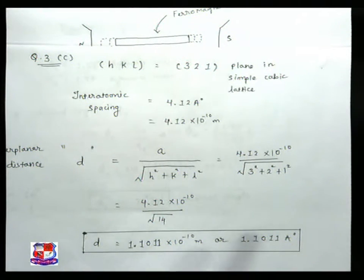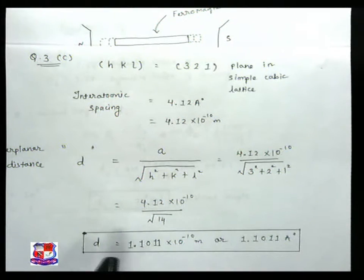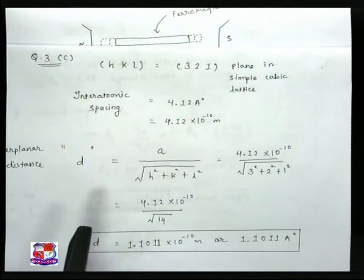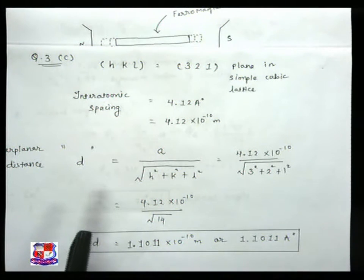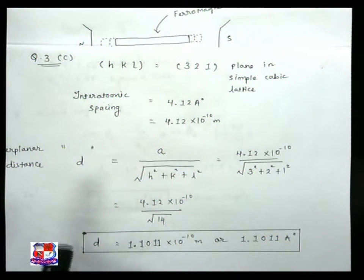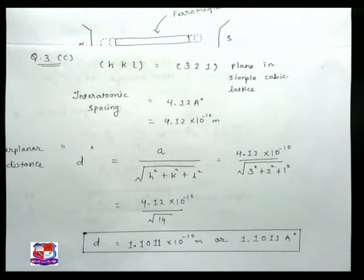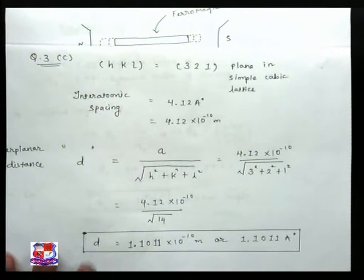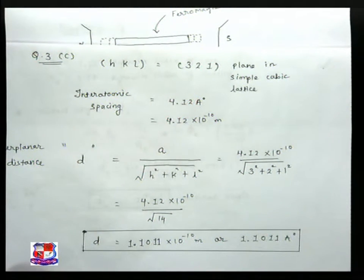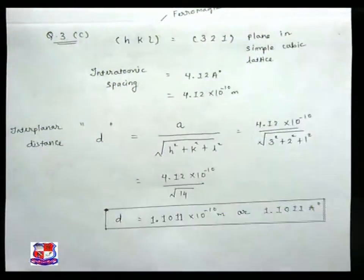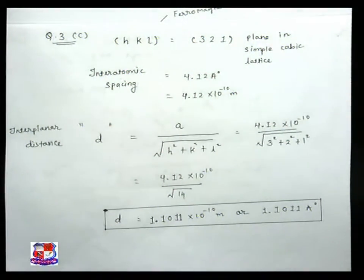So 1.1011 angstrom is the interatomic distance of a simple cubic lattice. This is the simplest equation through which you can solve the problem of crystal structure.